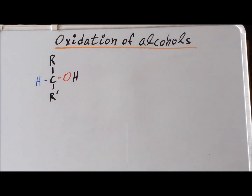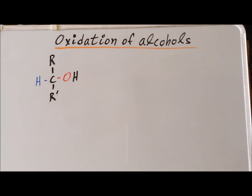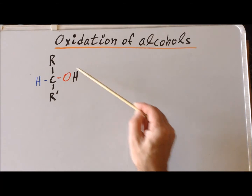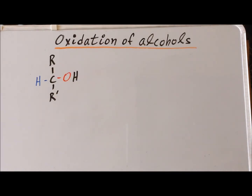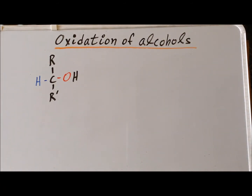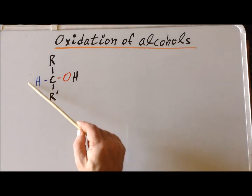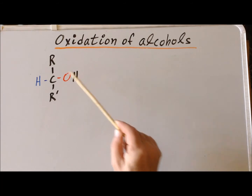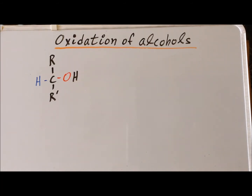Now we look at the oxidation of a secondary alcohol. Here is the general structure: attached to the carbon that has the hydroxyl group, we have two R groups, denoted as R and R prime. R and R prime can be either different or the same, but neither can be hydrogen alone. If either were hydrogen, we would have a primary alcohol, not a secondary alcohol. So R and R prime must be alkyl groups. Notice that we have only one alpha hydrogen attached to the carbon that holds the hydroxyl group.